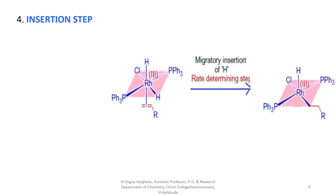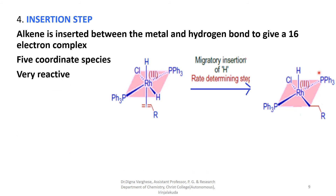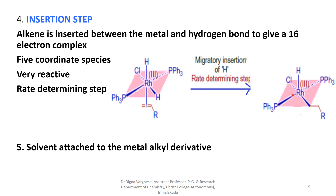This step is an insertion reaction step. The alkene, which is in close proximity with the hydrogen atom, is inserted between the metal and the hydrogen, forming a 16-electron complex. Here you can see the 5-coordinated species — rhodium is attached to five ligands. It is a 5-coordinated complex and is highly reactive. It is the slow step, so it is the rate-determining step. The solvent can again attach to the metal alkyl derivative, forming a 6-coordinated complex.